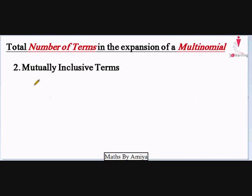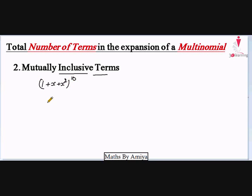In the first type — mutually exclusive terms — we distribute the powers. If we have inclusive terms, meaning something common, then we work in bundles. For example, if we have 1 plus x plus x squared raised to power 10 and need the total number of terms, here x and x squared share the common factor x, so we cannot just distribute the power because the groups are not independent.